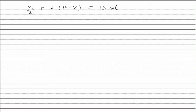Solving this, we get the value of X is equal to 10 ml. Therefore, the volume of carbon monoxide is 10 ml, and the volume of CH4 will be equal to 14 minus 10, which is equal to 4 ml.